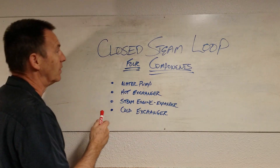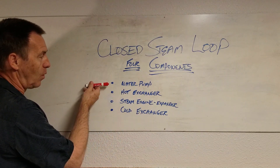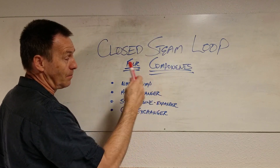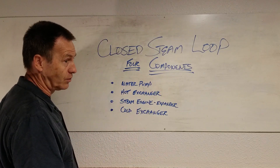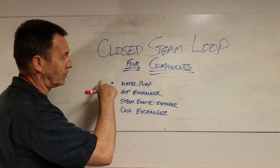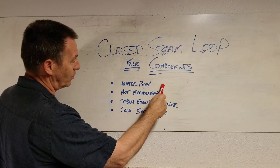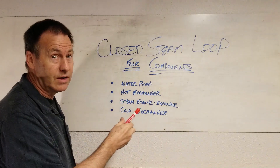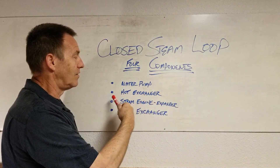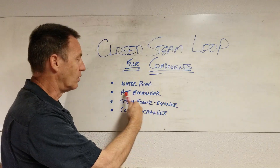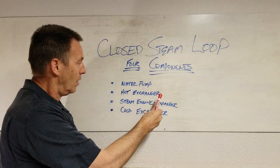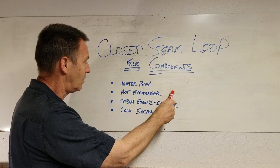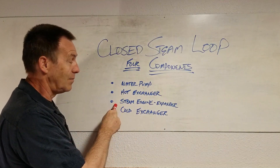These are the four components of the closed steam loop. We start with the water pump. Its job is to feed water from the low pressure side into the high pressure side. Now we have high pressure water that goes to the hot exchanger, where it's going to flash boil into steam. Notice that this is already at high pressure — all we're doing is changing the volume. So now we have high pressure steam at the end of the exchanger, which goes into the steam engine.